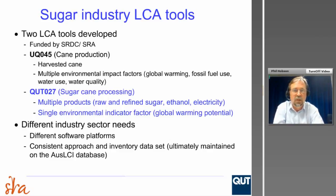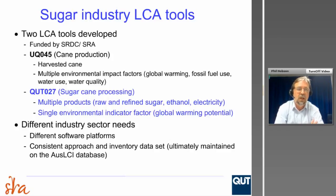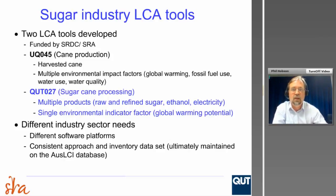We've developed a sugar industry tool with SRDC and SRA funding. There were actually two tools being developed at the same time: one for the cane production side, undertaken by Marguerite Renouf at the University of Queensland, covering harvested cane and looking at multiple environmental impacts. The software we were involved in was developed under project QUT027, which extended the life cycle system all the way to end products, with a single environmental impact factor — essentially global warming potential.